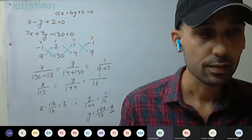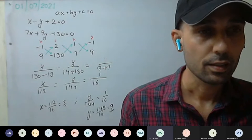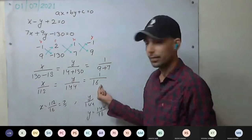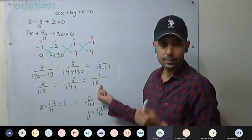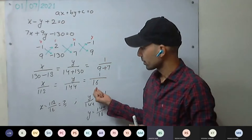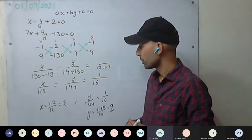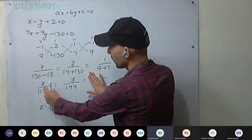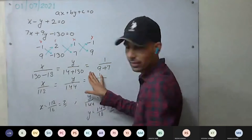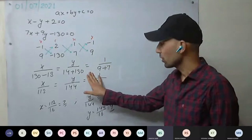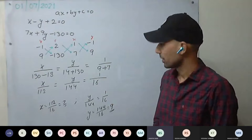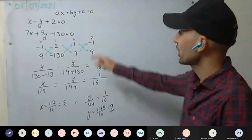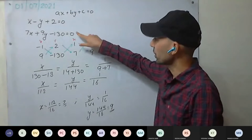If you put the value of x in the second equation it is also correct. If you solved first and got the value of x, then put x in the first equation — that is x minus y — you put 7 then solve for y. You can solve that way. You can put the value anywhere; you will get the answer.